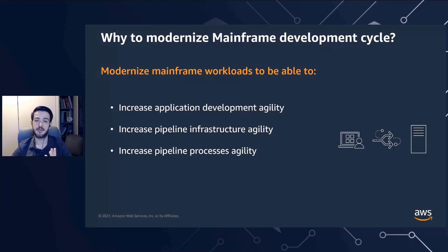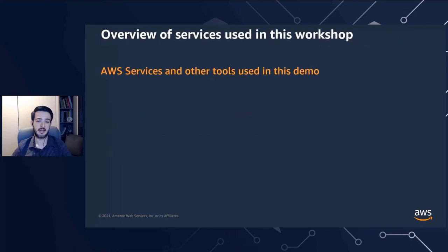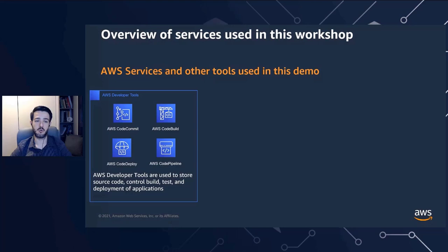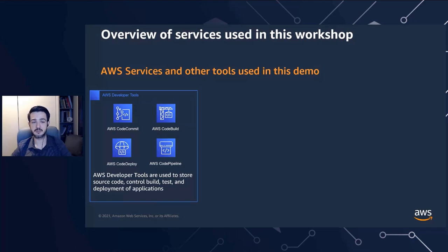Now let's look at the tools we'll use in our demo. These services are spread across categories including AWS services and vendor services. First, the AWS developer tools, used to share source code, do code build, test, and deploy applications. AWS CodeCommit is a highly scalable managed source control for storing source code in private Git repositories. AWS CodeBuild is a fully managed continuous integration tool for building packages, compiling code, and running tasks to prepare for deployment.